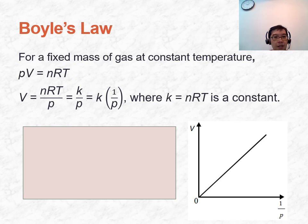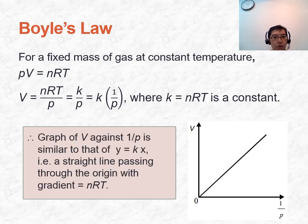V was inversely proportional to P, and the numerator K equals nRT, which is a constant. If we change to plot V against 1/P, it becomes a straight line passing through the origin. The gradient of this straight line is equal to nRT.